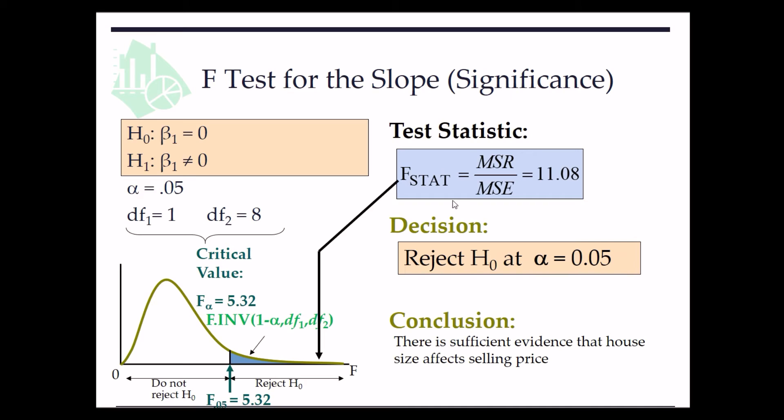And we have that the F-stat 11.08 is greater than the F-test critical value, which is located by Excel using formula F.INV 1 minus alpha, df 1, and df 2. So in conclusion, we have the F-stat greater than the F-critical value.